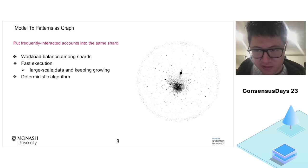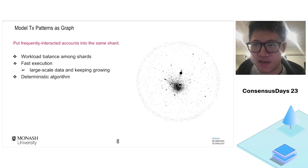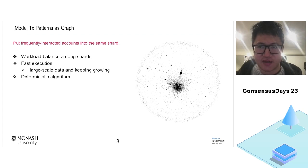Here comes our solution. We try to put frequently interacting accounts into the same shard. We model the historical transactions as a transaction graph. In this illustration of Ethereum transactions, each dot represents an account — the size of the dot represents the activity of each account, and the distance between dots means that accounts with more interactions are placed closer together. By this approach, we convert the transaction allocation problem in blockchain to a graph partition problem on this transaction graph. But there are some challenges.